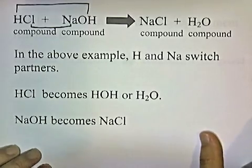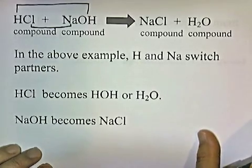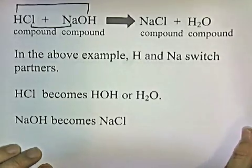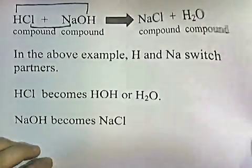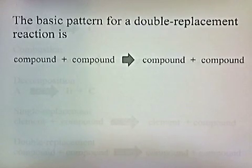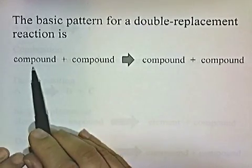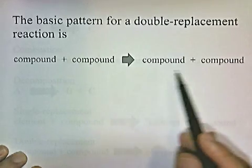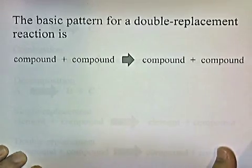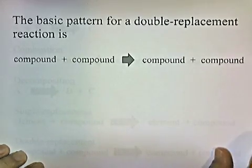So once again, you have two replacement reactions going on — everybody's switching partners. The basic pattern for a double replacement reaction is: compound plus compound gives compound plus compound. That's how you can recognize it.